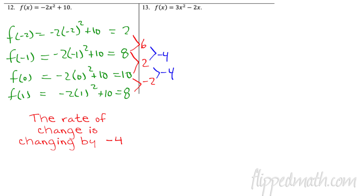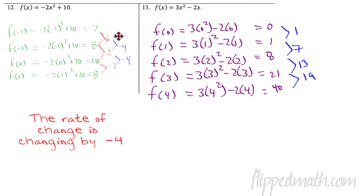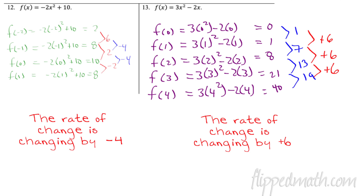Try number 13 by yourself — pause the video and find the rate of change of the average rates of change. Here's what I got: I chose intervals starting at 0, plugging in f(0) through f(4). The average rates of change were 1, 7, 13, 19 — each going up by 6. So the rate of change of the average rate of change is positive 6, which is constant.